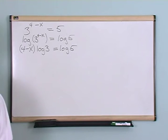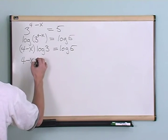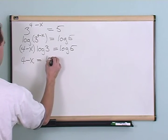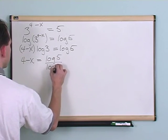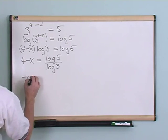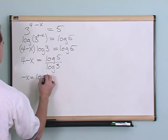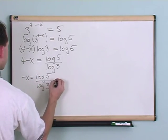So I can say 4 minus x. I'm going to divide both sides by log of 3 is log of 5 over log of 3. And again I'm solving for x so I can move the 4 over here. So I'm going to have negative x equals log of 5 over log of 3 minus 4.